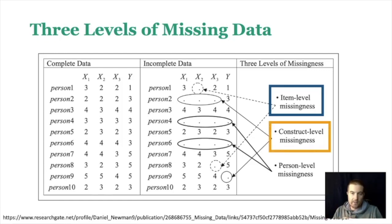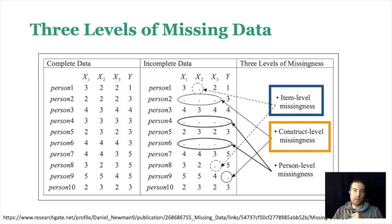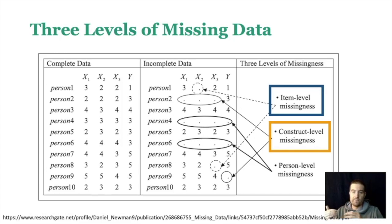You also have construct level missingness, where you have missing across the whole construct — the whole measure for that idea is missing. So we have x1, x2, x3 measuring all of construct x, and then y as a single measure of that construct. Construct level would be missing all of the x's, like for person two, or missing their y value. When you have a single item measure, it can be item level or construct level — it's the same in that case — but we call it construct level because it's a bigger problem.